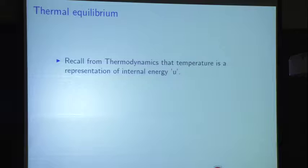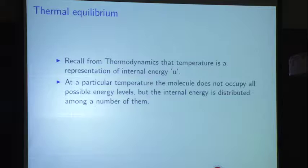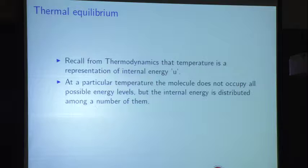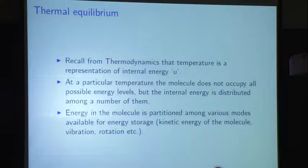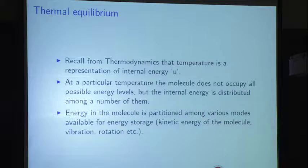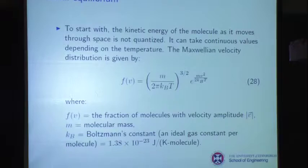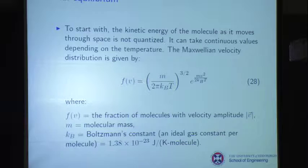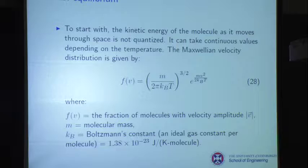From thermodynamics, temperature is a representation of internal energy. At a particular temperature, a molecule won't occupy all available energy levels — it occupies a distribution of them but not all. The energy in the molecule is partitioned among various modes available for energy storage: kinetic energy certainly, and then vibration and rotation. The kinetic energy is given by the Maxwellian distribution function, which is a Gaussian expression. FV is the fraction of molecules with a given velocity amplitude; M is the molecular mass; KB is Boltzmann's constant.